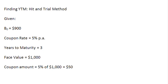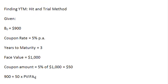In the equation for bond valuation, the left-hand side is the price of the bond, which is already given to us: $900. So the price of the bond equals the coupon amount of $50, multiplied by the present value interest factor of the annuity at K% for 3 years.